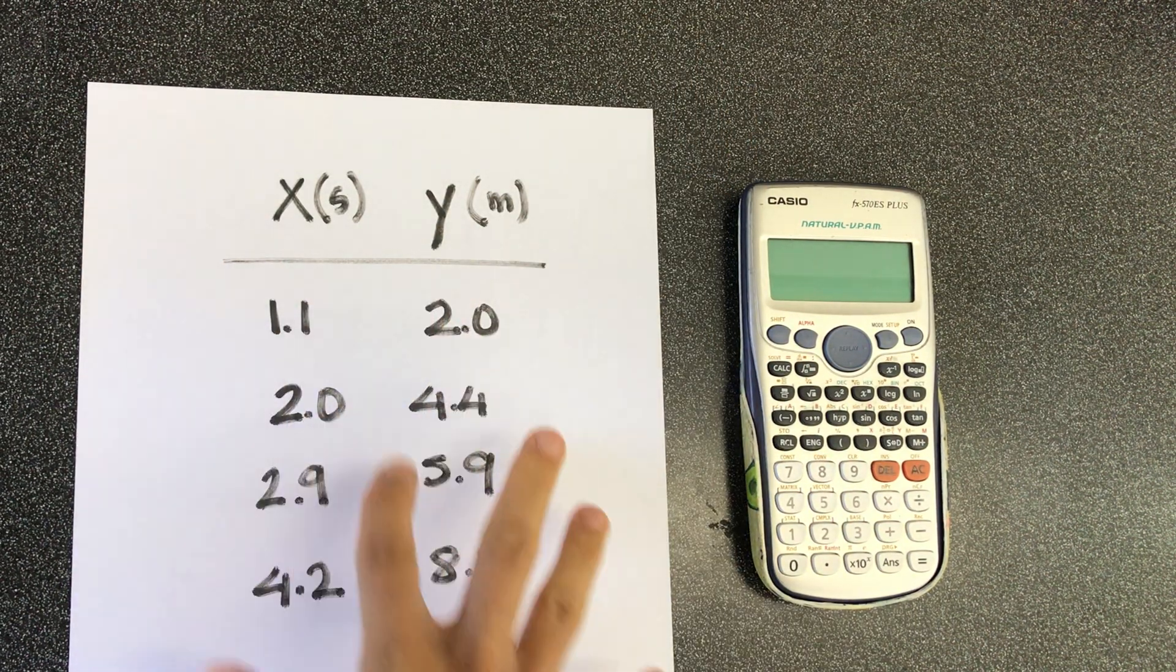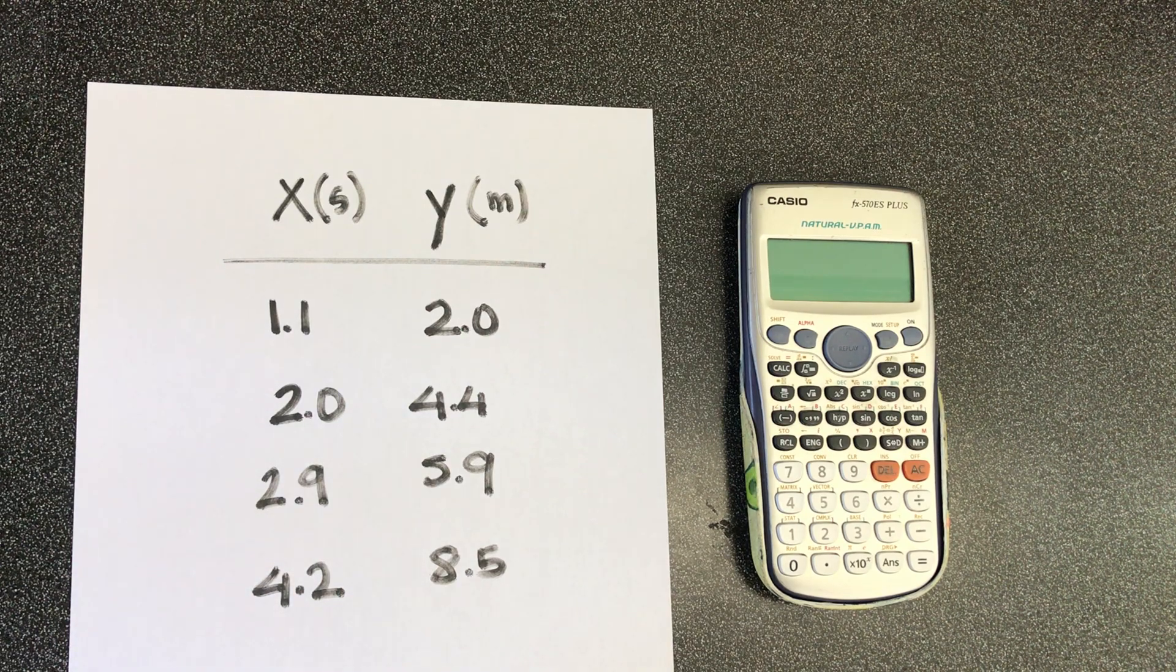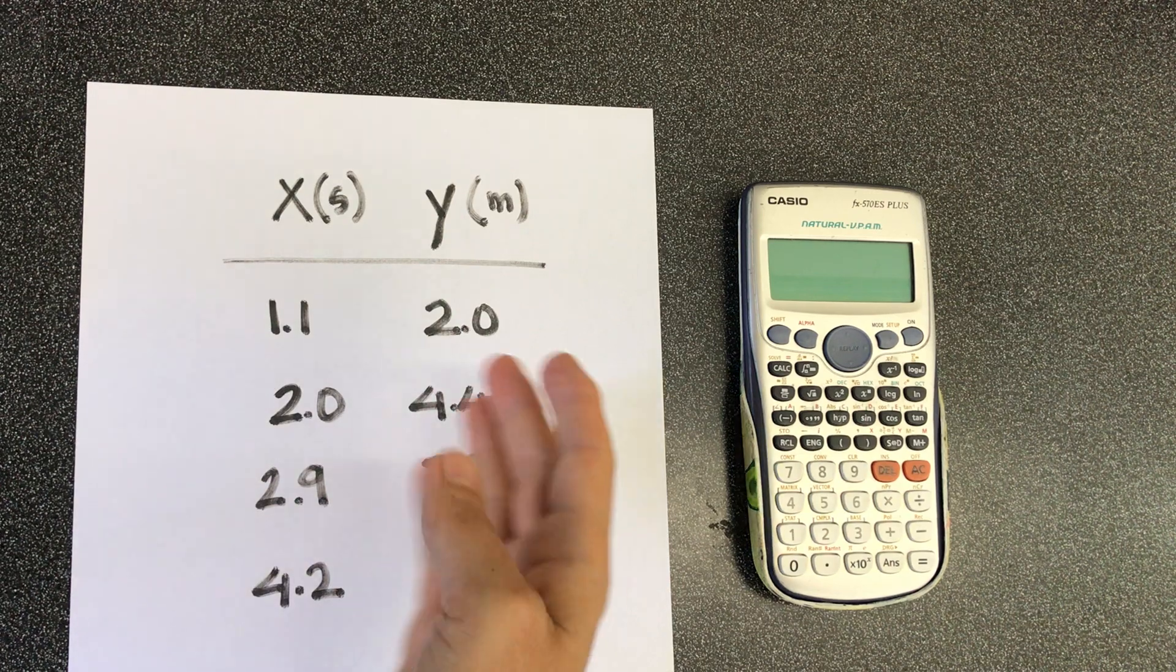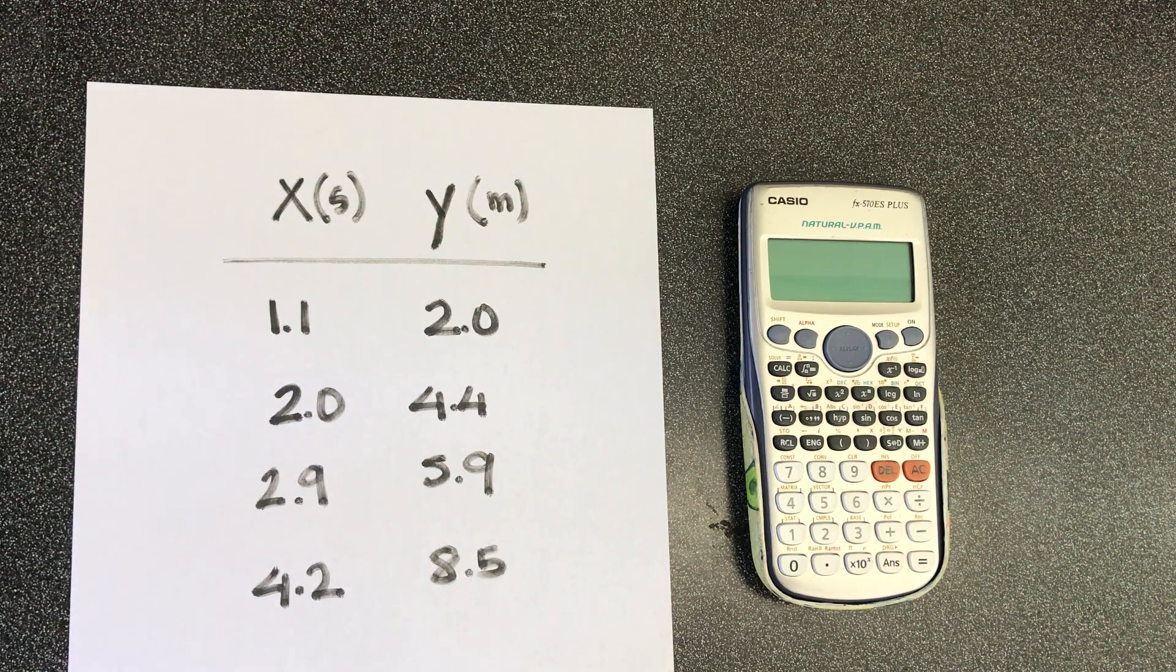And you have some measurements done. Each measurement has two significant figures. And you were supposed to plot y versus x as usual, and then find the slope.